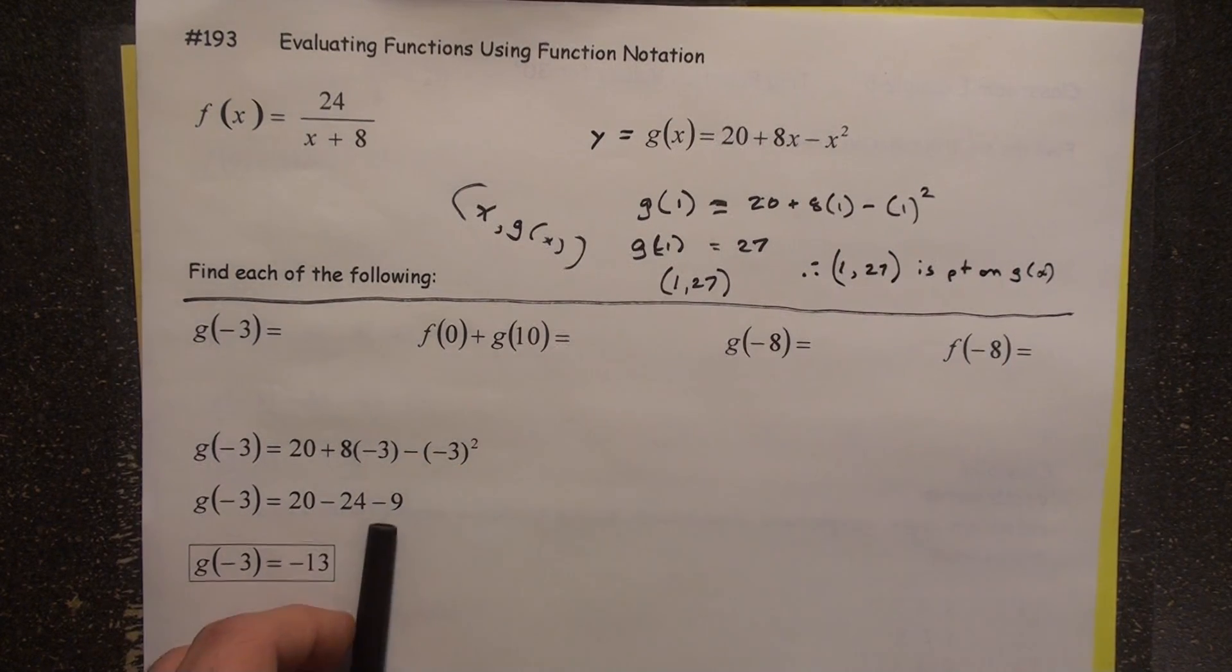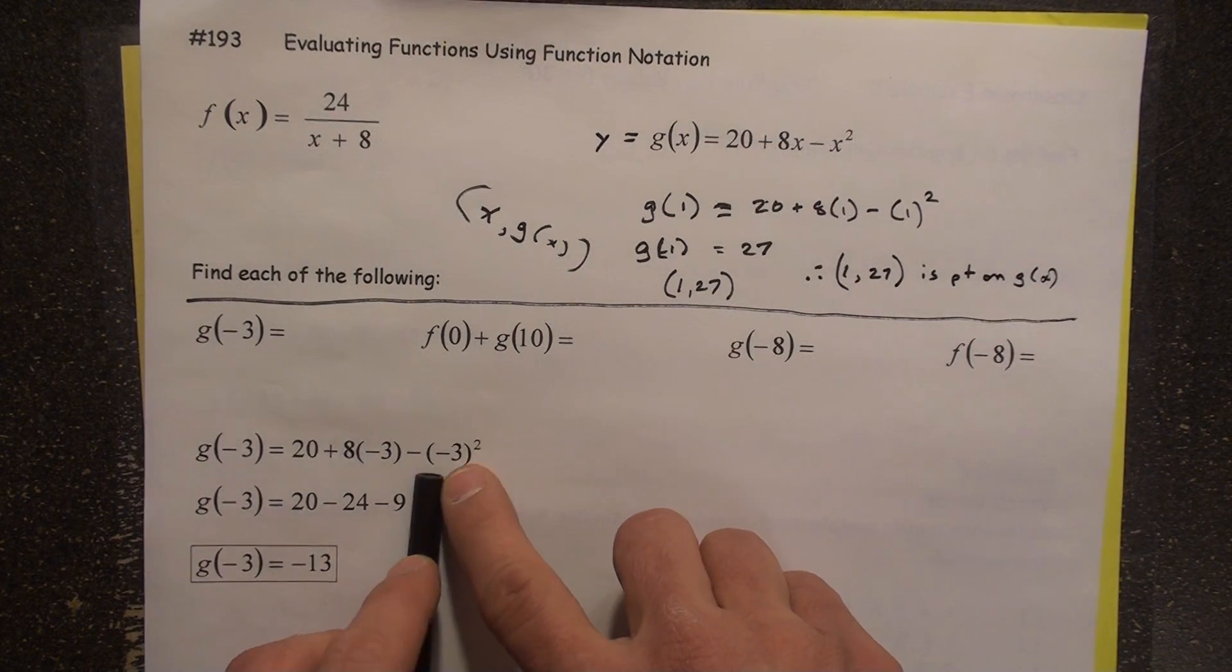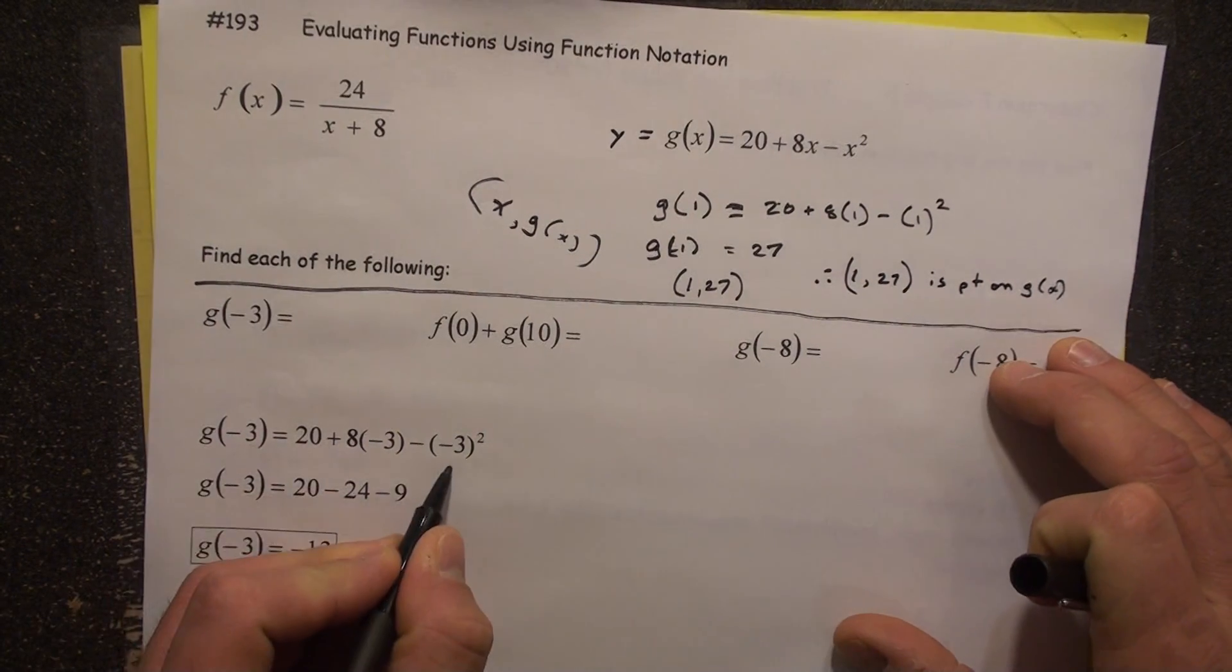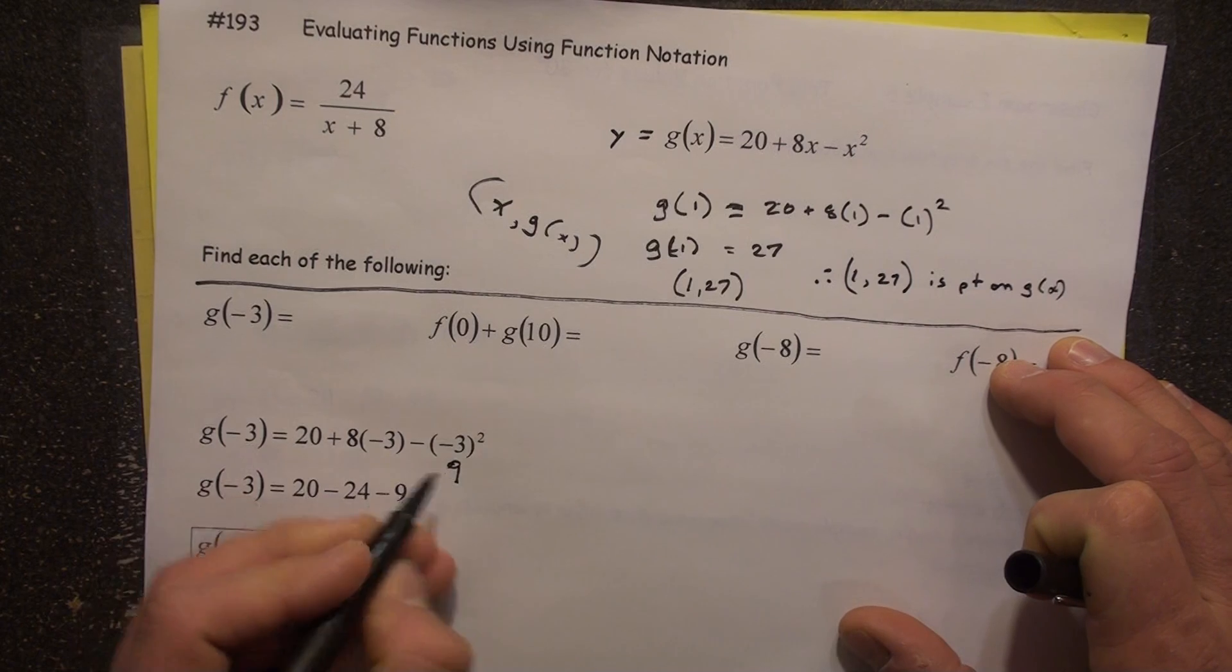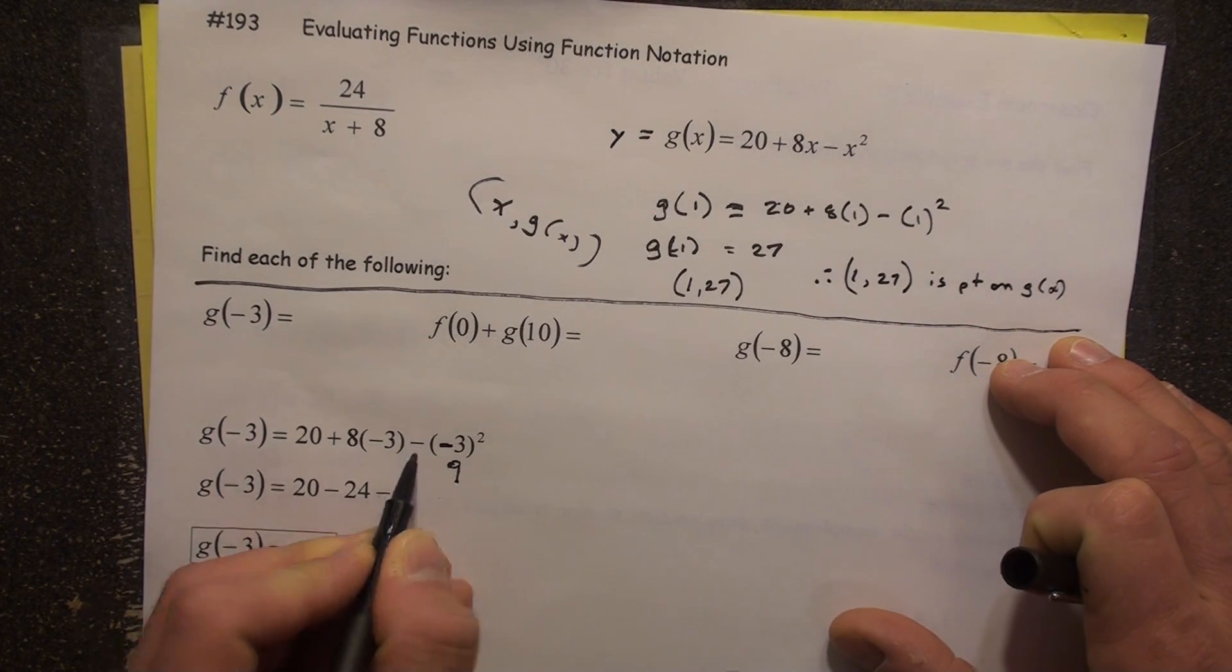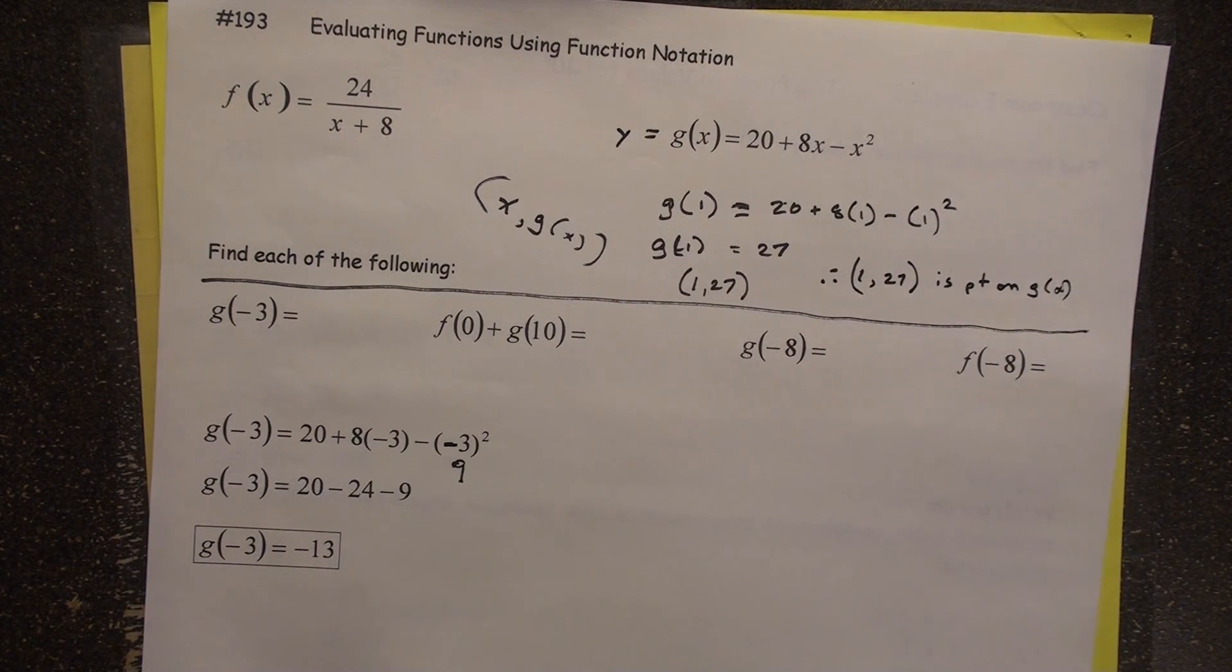This is not a mistake. This is definitely not a negative times a negative. Remember the order of operations. You're definitely going to have to do the exponent first. So you're going to square the negative 3 first. That gives you a positive 9. That negative was used when it got squared, and then this minus sign comes right down, so it ends up being minus 9. Therefore, negative 13.